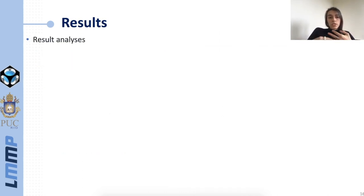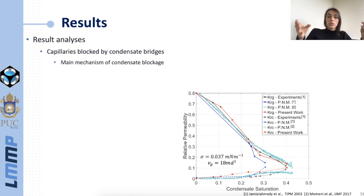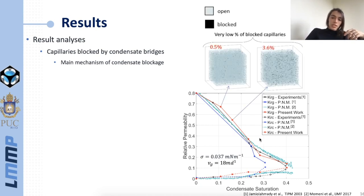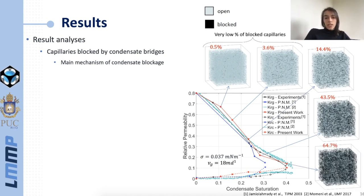Finally in the results section I would just like to present some analysis that we ran for all the cases we simulated. I would just present one example here with this case. The first thing we analyzed was the number of capillaries blocked by condensate bridges because this is the main mechanism of condensate blockage. If we analyze point by point on those curves starting with this one and this one, we can see that indeed for those two first points we have a very low percentage of blocked capillaries which may explain this overestimation. Then when we move in the higher condensate saturation direction we can see that this percentage increases continuously.